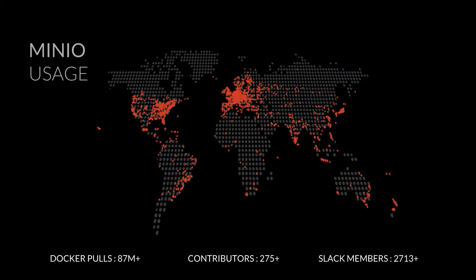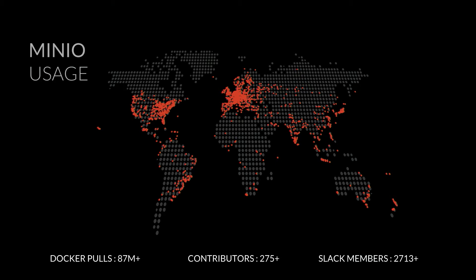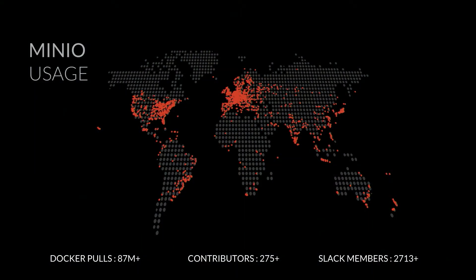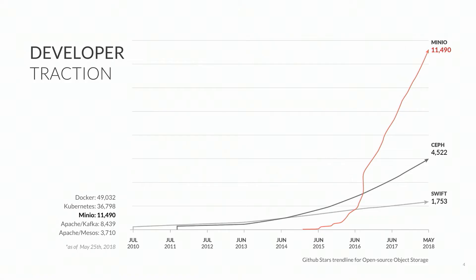Minio usage: we've got over 90 million Docker pulls. I get the Docker pulls — maybe a lot of CI/CD churn — but considering that number was 60 million in March, that's not too bad. We've got over 275 contributors. We are open source. We've got a very active Slack channel, so feel free to join with any questions. Developer traction — this is the number of GitHub stars. We're at 11.7K stars right now. Docker's at about 50,000, Kubernetes around 37,000. The two comparisons you see are Swift and Ceph. There's a lot of traction here and things are moving in a very positive direction.